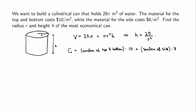I need to replace the words with actual equations. The surface of the top is pi r squared, and the same for the bottom, so the surface of the top and bottom together is 2 pi r squared times 10. The surface of the side is the circumference times h, so that's 2 pi r times h times 8. This gives me 20 pi r squared plus 16 pi r h, and this is the cost function I'm trying to minimize.